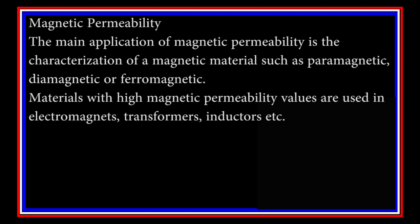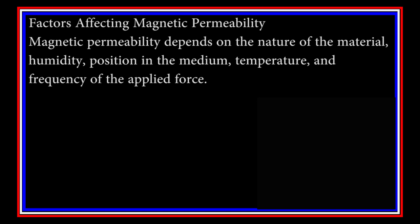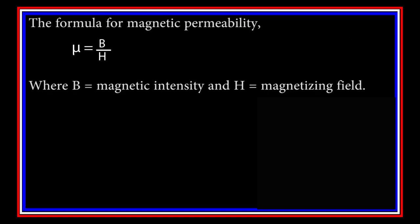Materials with high magnetic permeability values are used in electromagnets, transformers, inductors, and so on. Factors affecting magnetic permeability: magnetic permeability depends on the nature of the material, humidity, position in the medium, temperature, and frequency of the applied force. The formula for magnetic permeability: mu is equal to B over H, where B is magnetic intensity and H is the magnetizing field.